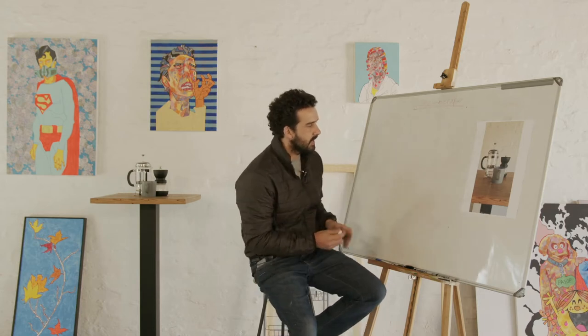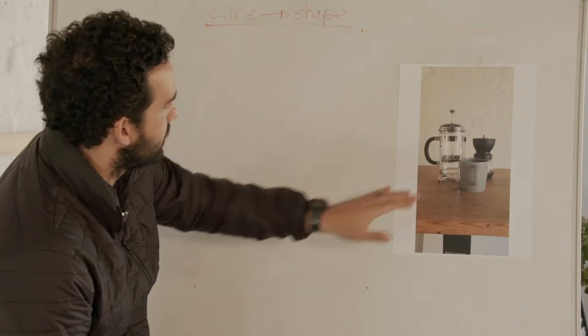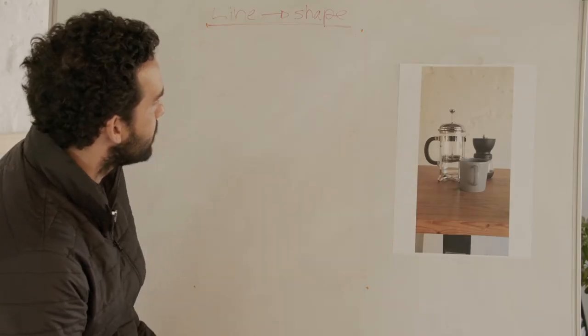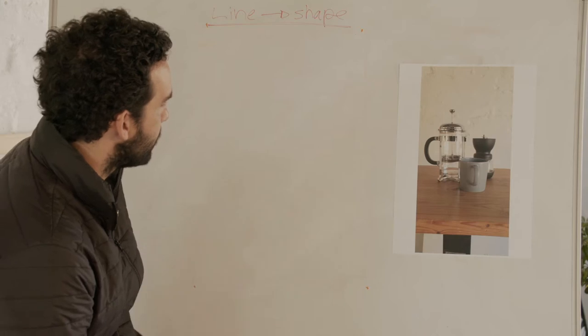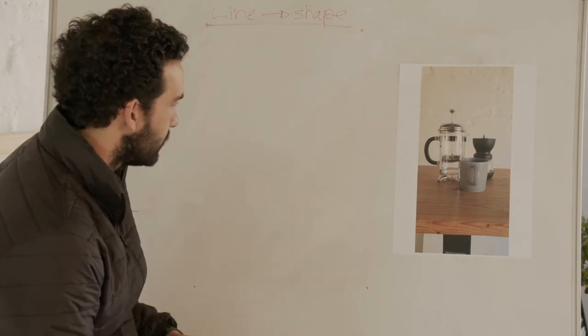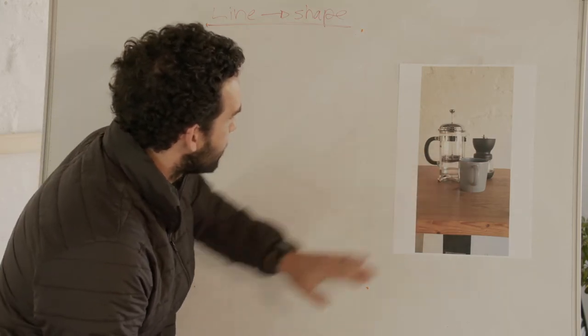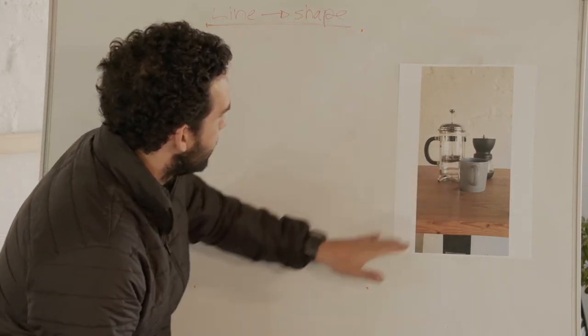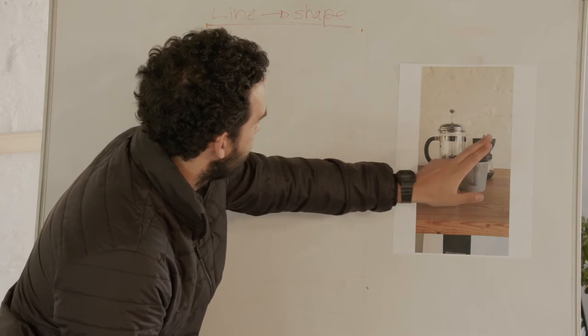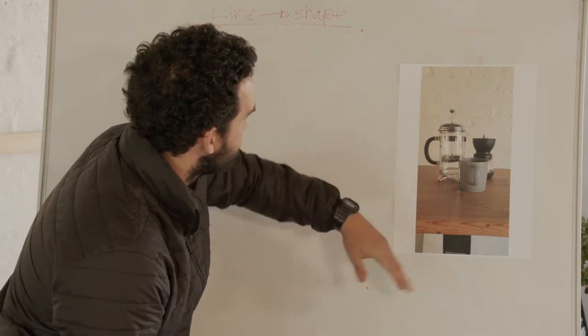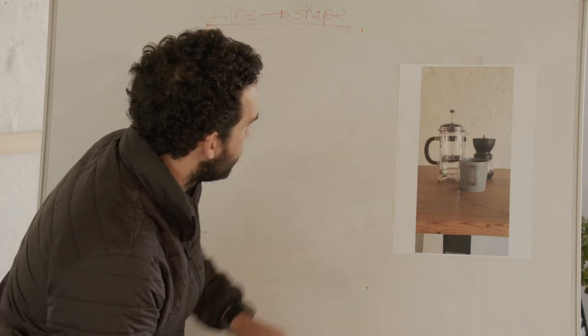Look very carefully at your arrangement, and I want you guys to do this at home — choose some very simple objects. I've chosen my coffee grinder, French press, and a coffee cup, and we're going to be looking at how to draw this structurally.